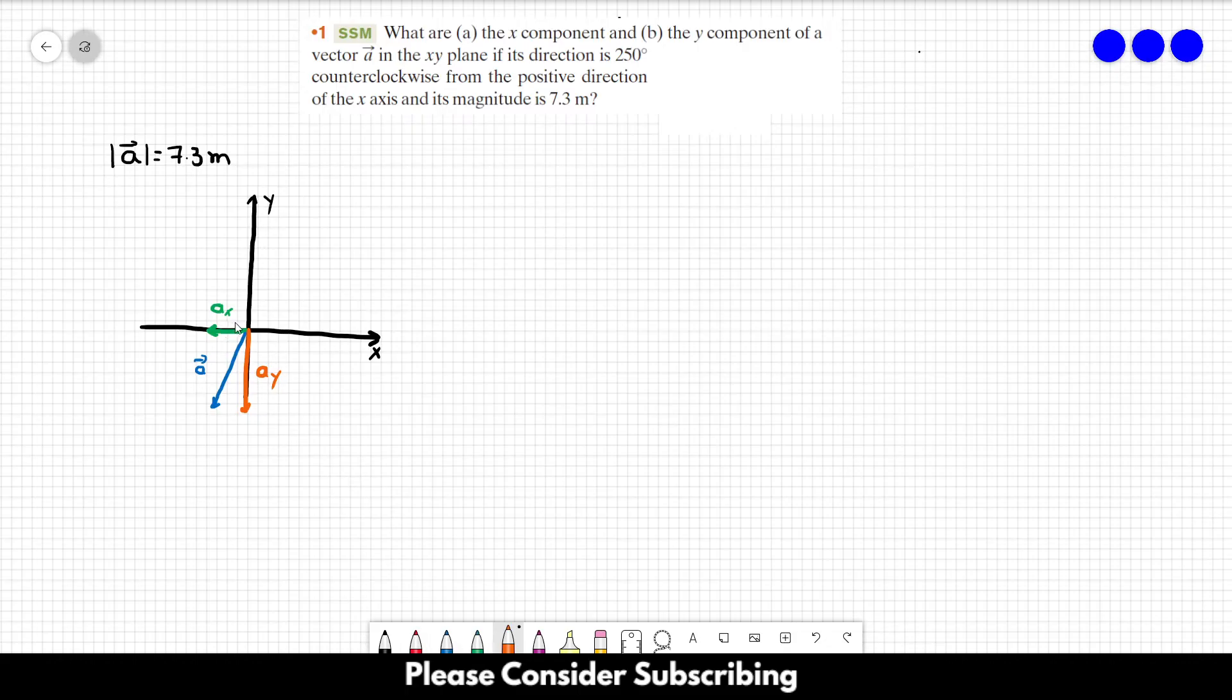How can we find AX, the X component of the vector? We just take the magnitude of the vector and multiply by the cosine of the angle, which in this case is 250 degrees.